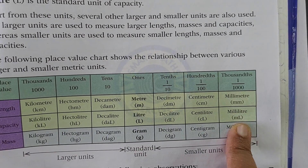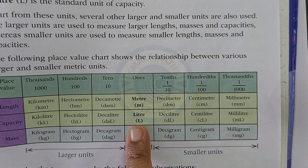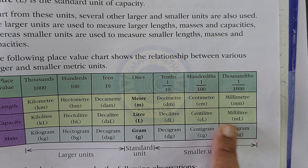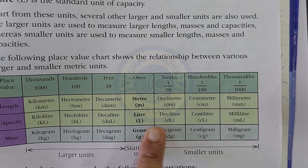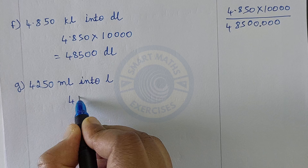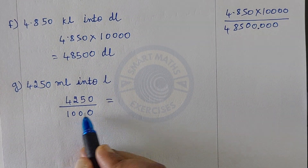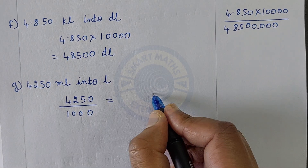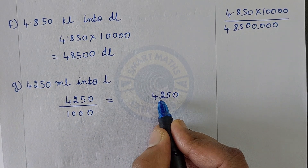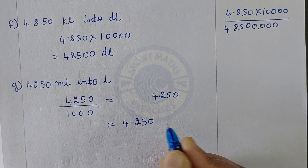Convert 4250 mL into liters. We are converting from milliliter to liter — smaller to larger — so we divide. Milliliter to centiliter is 10, centiliter to deciliter is 100, deciliter to liter is 1000. Divide 4250 by 1000. Count the three zeros and place the decimal after three digits: the answer is 4.250 liters (or 4.25 liters).